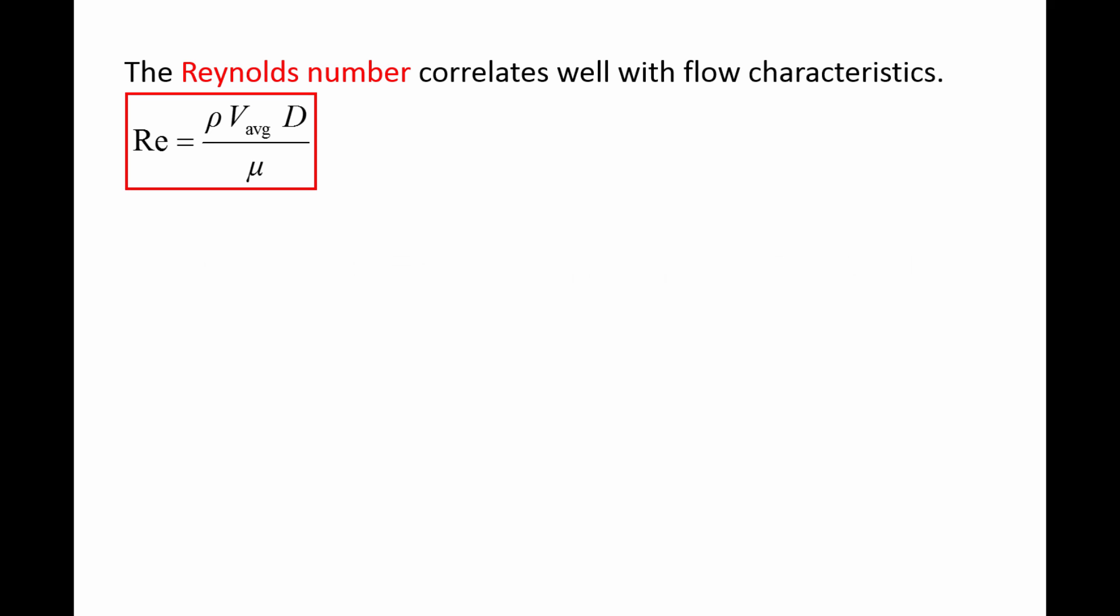One of the most important parameters in studying flows in pipes is the Reynolds number, denoted by the abbreviation Re. For pipe flow, the Reynolds number is defined as the fluid density ρ times the average fluid speed v̄ times the pipe diameter d divided by the fluid viscosity μ.